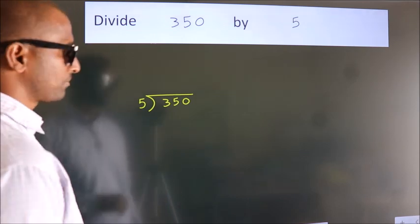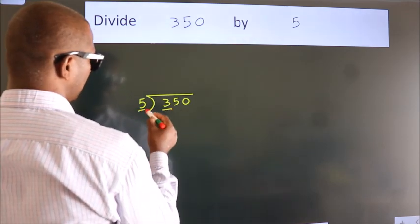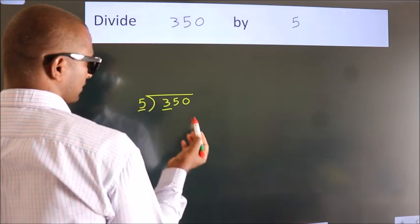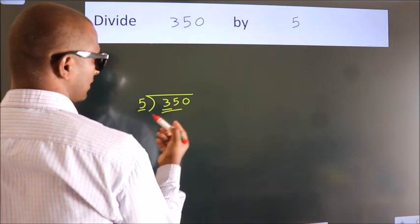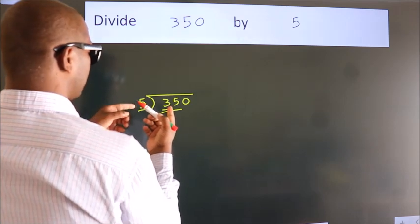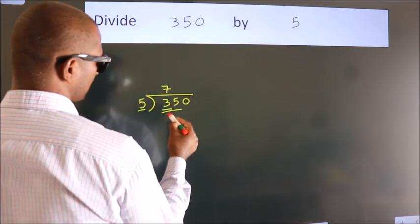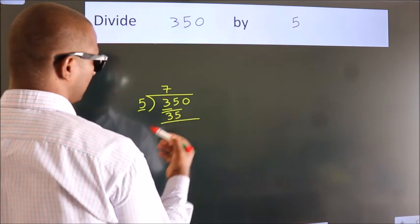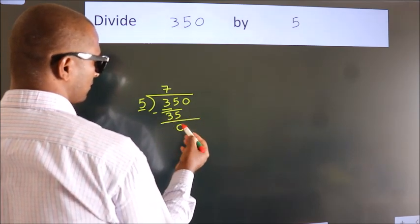Here we have 3, and here 5. 3 is smaller than 5, so we should take 2 numbers: 35. When do we get 35 in the 5 table? 5 sevens are 35. Now we should subtract. We get 0.